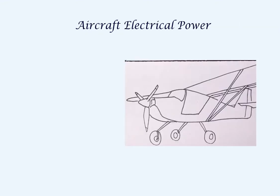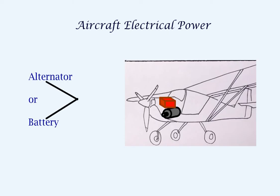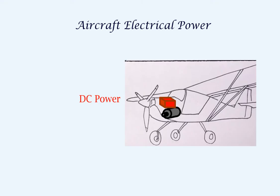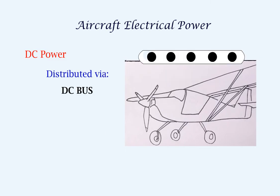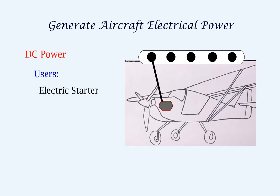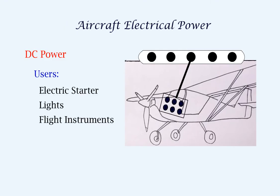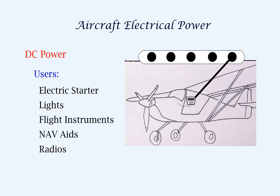The electrical power in small aircraft is obtained from an alternator or a battery. Both of them give us DC power. The DC power is monitored by an ammeter, load meter and the warning light in the cockpit. The power is distributed via a DC bus and is used for electric engine start, lights, flight instruments, navigation aids and radios.